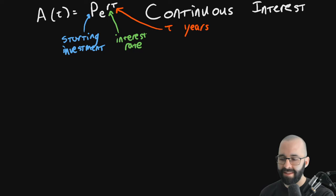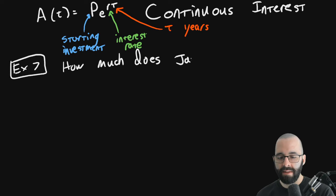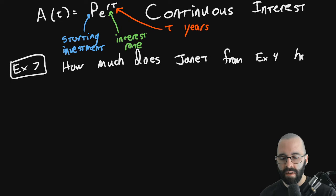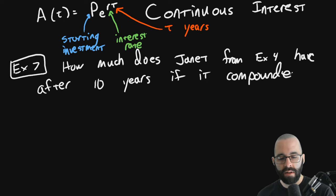Let's do some problems. Example 7. How much does Janet, good old Janet, from example 4, have after 10 years? If it compounded continuously.